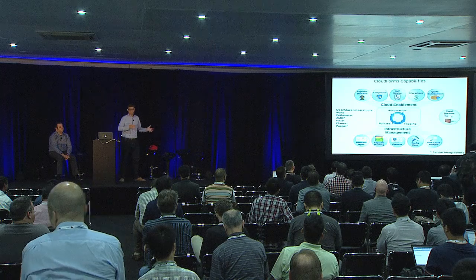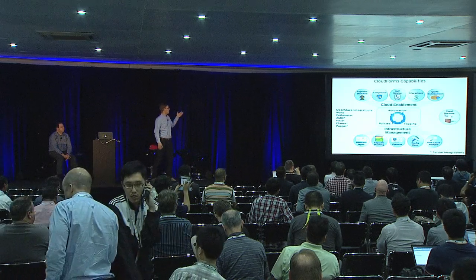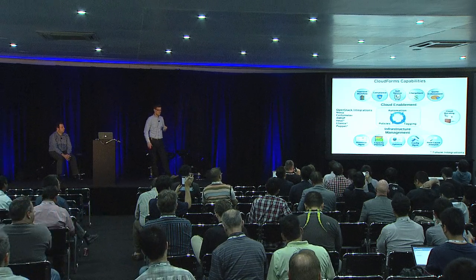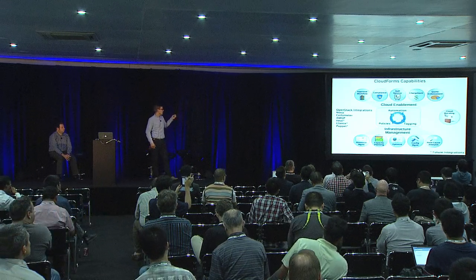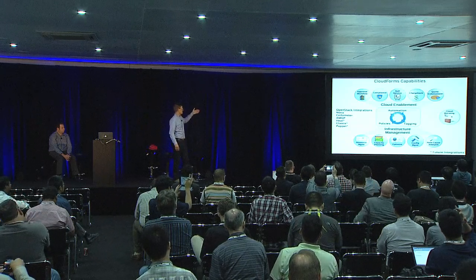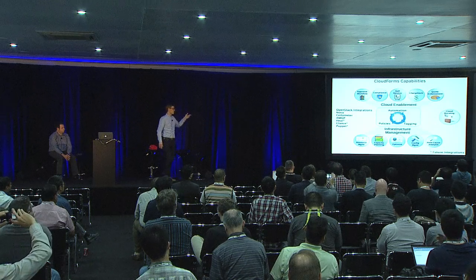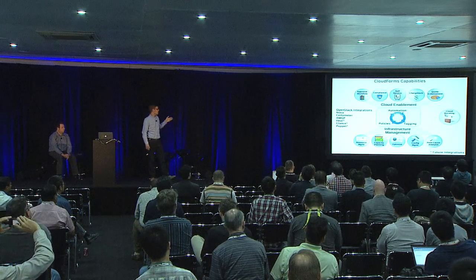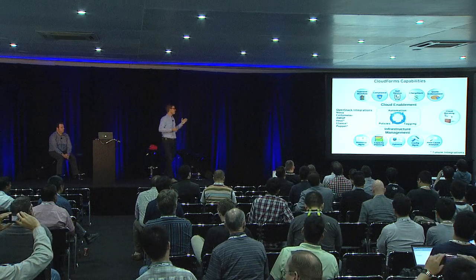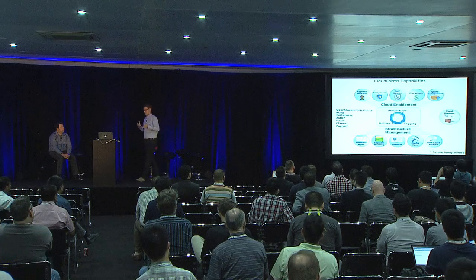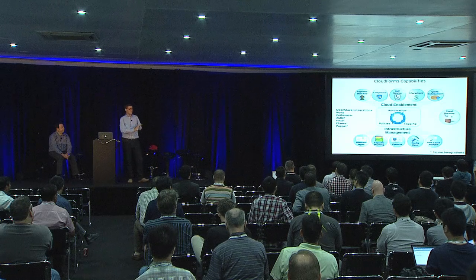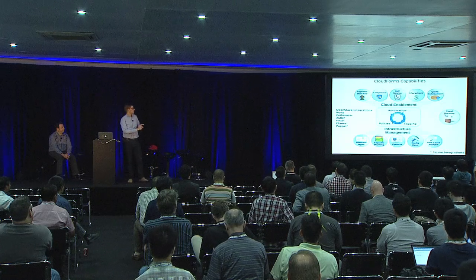The capabilities our hybrid cloud management platform delivers include approval and workflow, compliance, self-service, and basically all the operational capabilities you'd expect. With regards to OpenStack, we're integrating with Nova, Ceilometer, AMQP, Heat, and Glance — with Puppet as a future integration point. Today we're integrating with the Nova API, Ceilometer, and the AMQP event bus. CloudForms also supports data center virtualization — VMware vSphere and Red Hat Enterprise Virtualization — as well as public cloud on Amazon EC2.